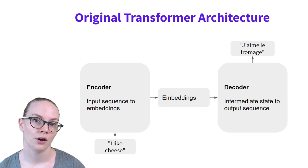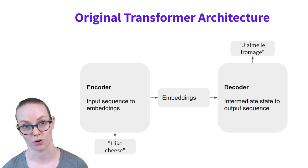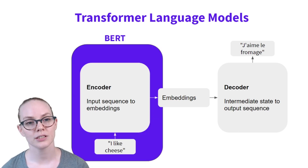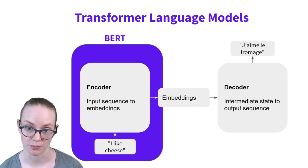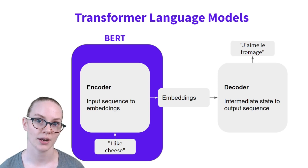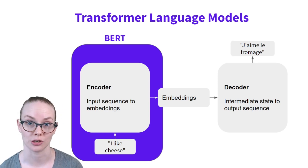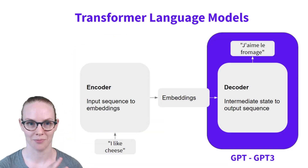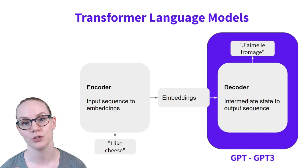In terms of architecture, GPT-3 really isn't any different from the original transformer architecture proposed by Vaswani et al., except much larger. It's a little different from BERT, another well-known large neural language model. BERT is designed to take in raw text and produce embeddings that can be used in other machine learning applications. In comparison, GPT-1 through 3 all use just the decoder half — they take in embeddings and produce text.